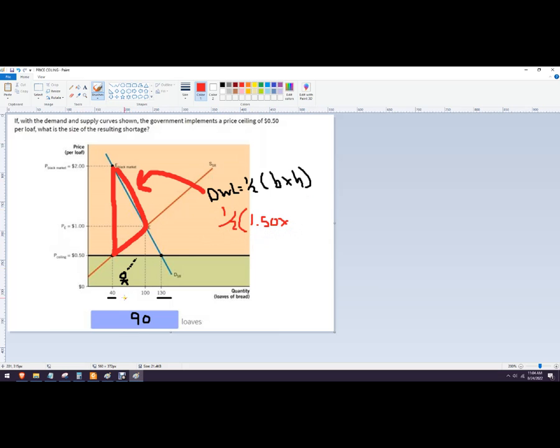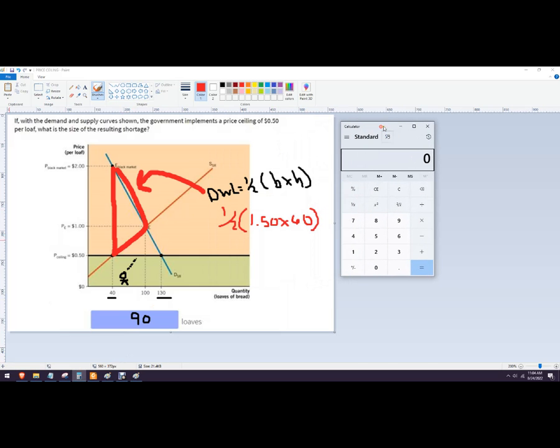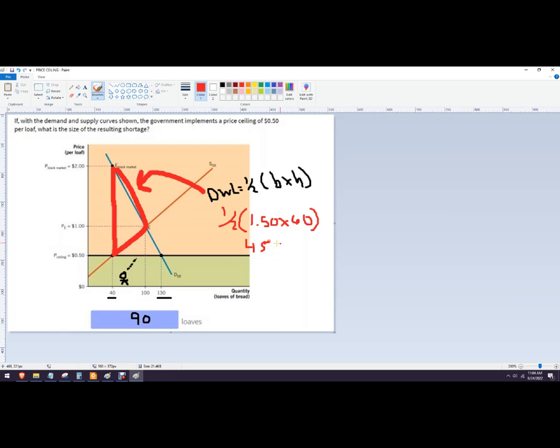And then the distance between 40 and 60 is right here, so that would be 60 units or 60 loaves of bread. I'm not that slick here, so I'll check - that one's 90, and then times one-half is 45. So the deadweight loss here is 45.